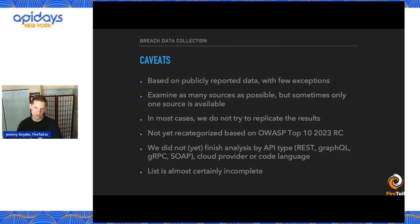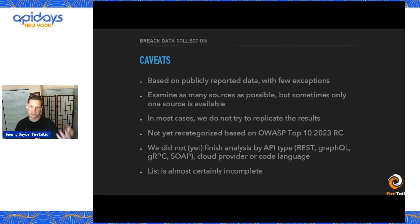We do not try to replicate the results — we don't attempt to exfiltrate data from organizations indicated in any of these breach events. We have not yet recategorized based on the 2023 OWASP API Top 10 release candidate since that is not yet finalized. And there are a couple of analysis areas we wanted to complete by the time we published this data, but unfortunately weren't able to finish in time.